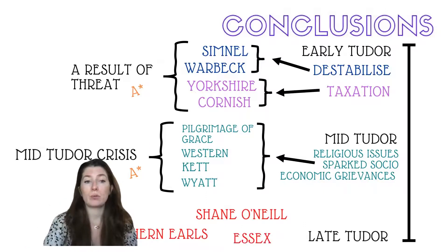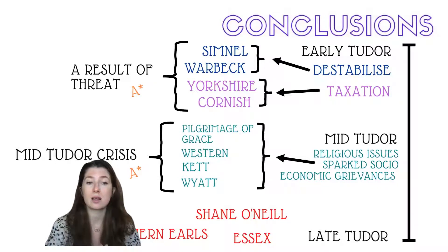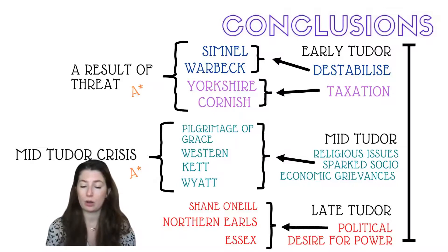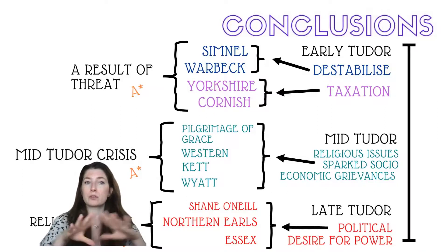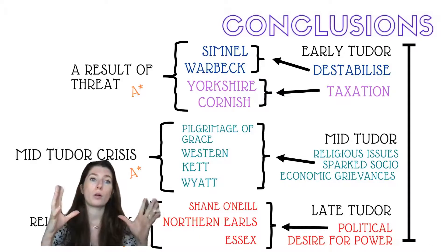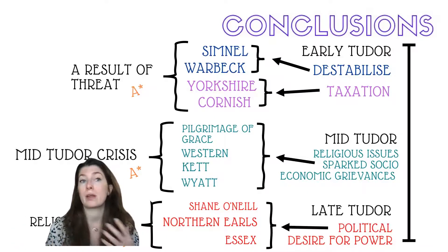In the late Tudor period we have Shane O'Neill, the Northern Earls rebellion, and the Essex rebellion. By Elizabeth's reign, Tudor government had stabilised and there was far more contentment among ordinary people. All three of these rebellions are arguably political rebellions mainly from the elite — they're really about power, not religious reform. Shane O'Neill and the Northern Earls have a religious cloak, but I believe religion is used to draw in popular support while the true motivation is factionalism and power for the nobility. They use religion rather than being motivated by it.